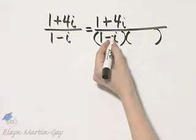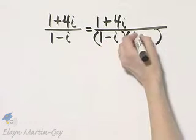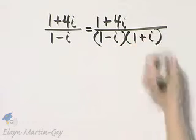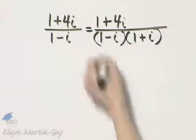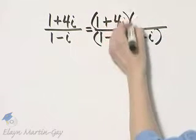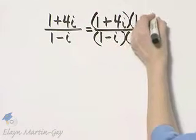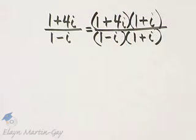What is the conjugate of 1 minus I? It is 1 plus I. And if I multiply the denominator by 1 plus I, I must multiply the numerator by the exact same thing.